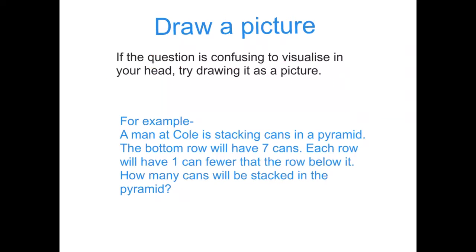So if you've got a question that when you read it you feel really confused and you can't picture in your head what the answer is, sometimes it's really good to draw a picture. So the question is: a man at Coles is stacking cans in a pyramid. The bottom row will have seven cans. Each row will have one can fewer than the row below it. How many cans will be stacked in the pyramid? You can see what I mean — you read it once and you're a little bit confused, thinking to yourself, I don't know how I'm going to solve this problem.